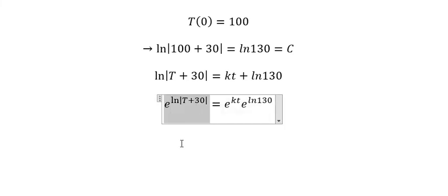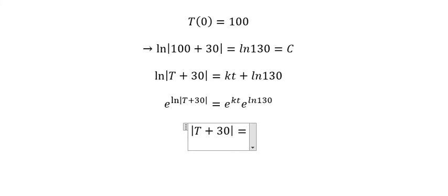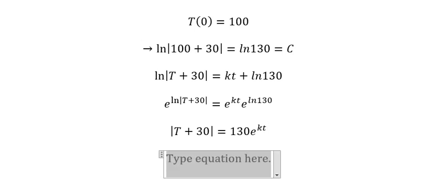This one in here we get T plus 30 equals to 130 multiplied by e to the power of kt. Now we need to cancel the absolute value in here, so we have two solutions.